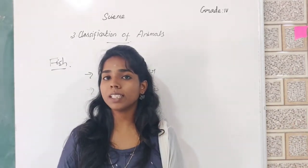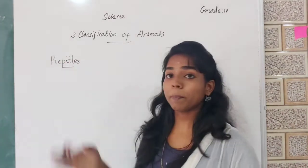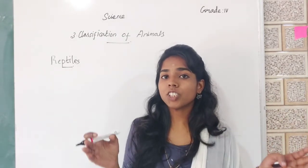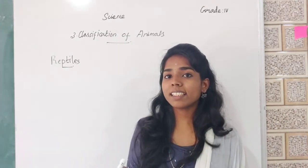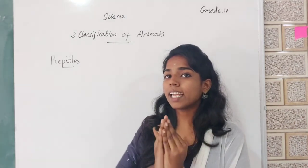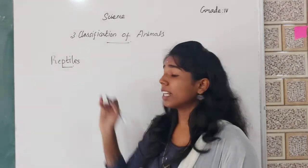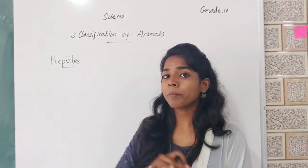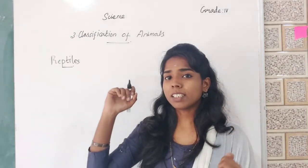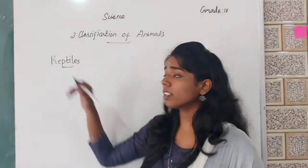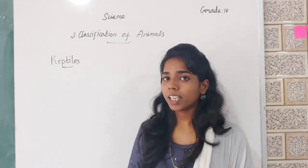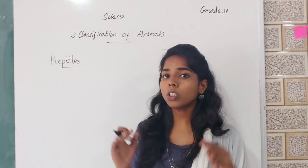The next group is reptiles. Which animals come under reptiles? Animals such as lizards, snakes, crocodiles, and turtles belong to a special group known as reptiles. What are the features of reptiles? Reptiles are cold-blooded animals.